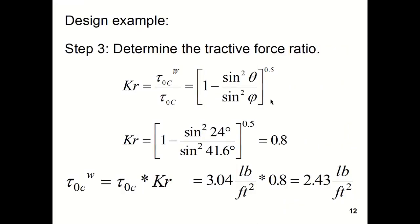I had to pause the video there for a moment. So τ₀c on the wall, the critical shear stress on the wall, is equal to τ₀c times the tractive force ratio. So the shear stress which would be applied to the wall would be 2.43 pounds per foot squared.